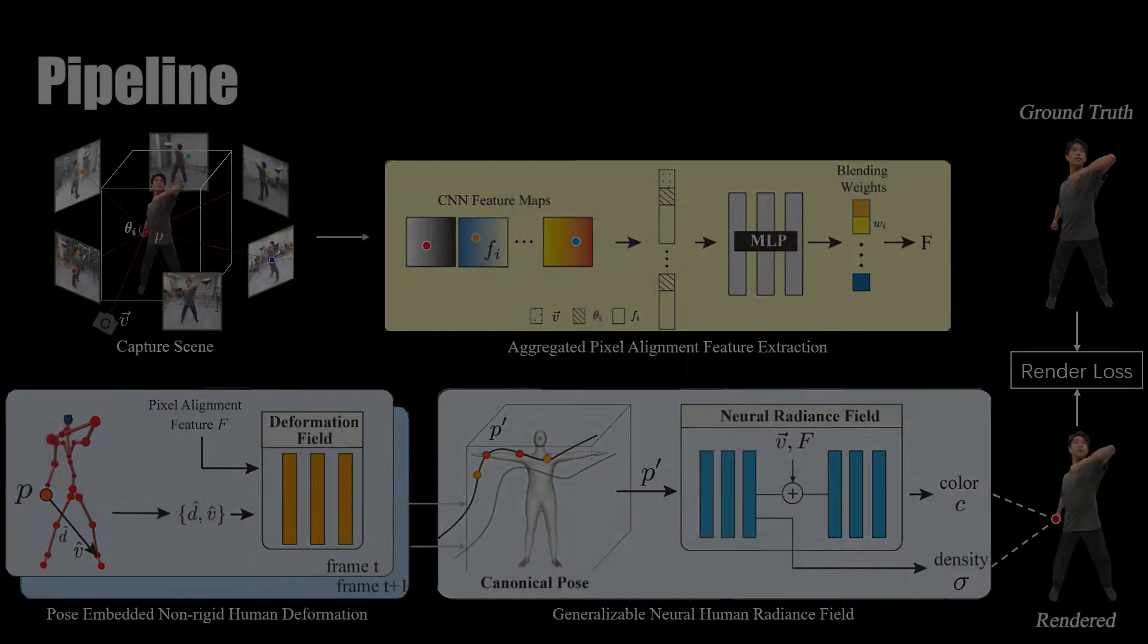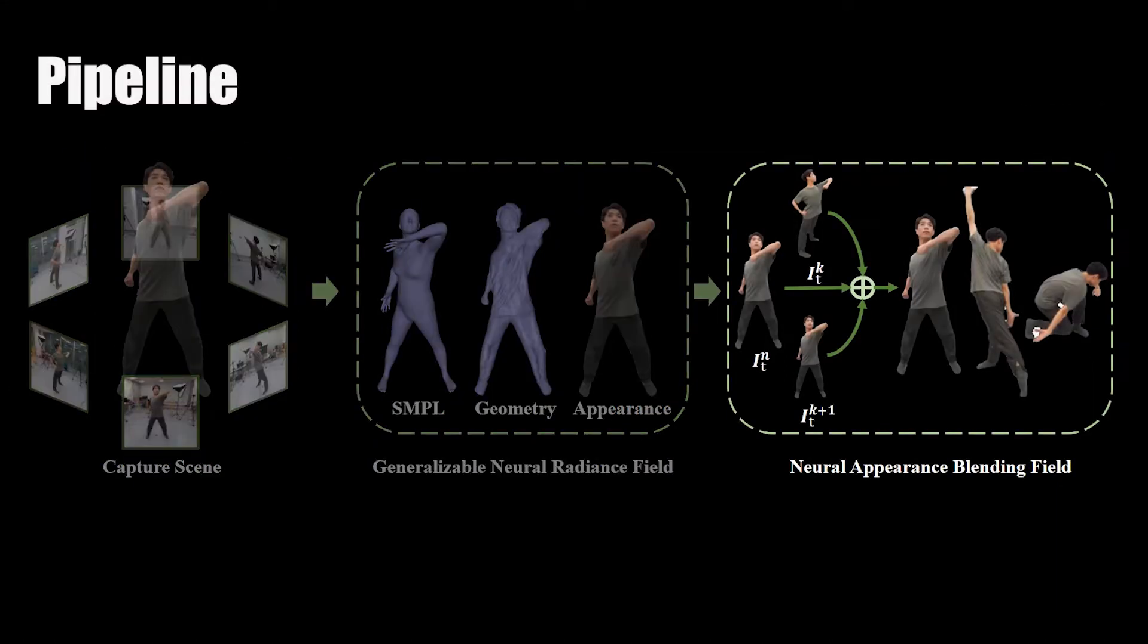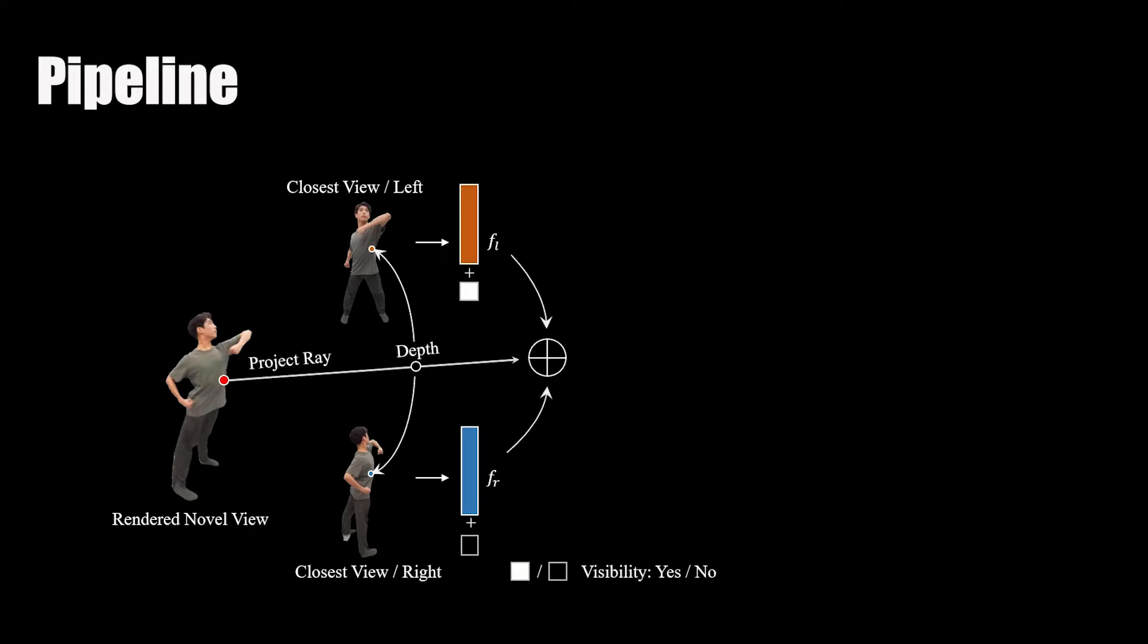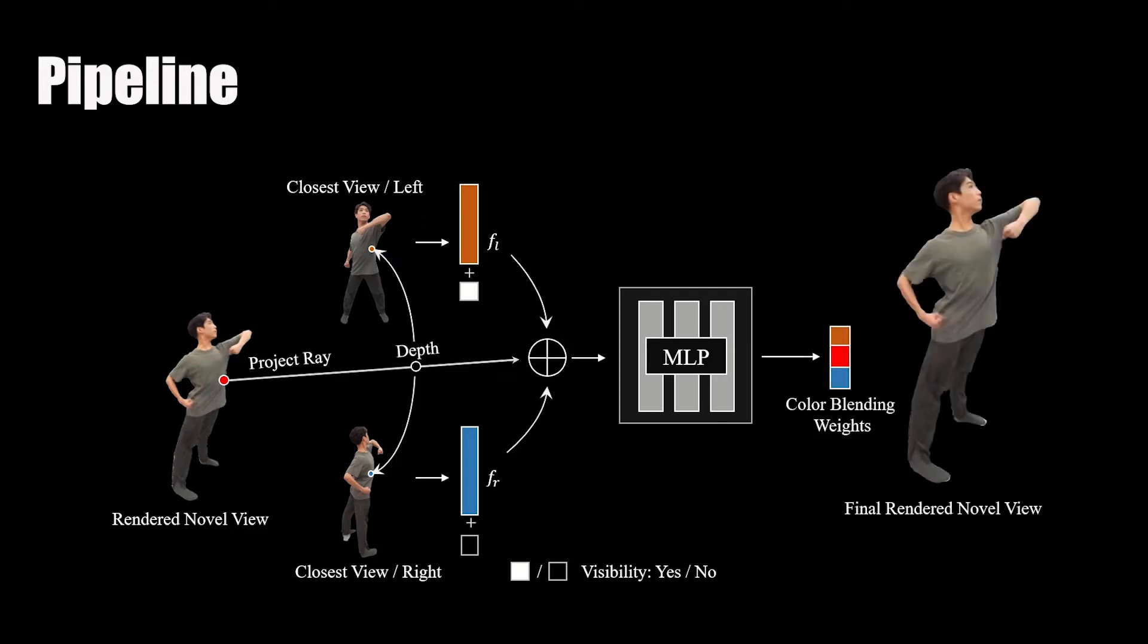To add more fine detail to our rendered appearance, we propose a novel appearance blending scheme. We use the rendered results from our General NeRF, back project the depth point into two closest views, and query corresponding color, feature, and occlusion information, then input them to our appearance blending module. We utilize the output color blending weights to generate the final rendering results.